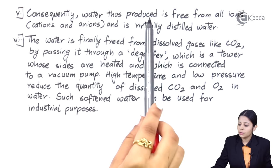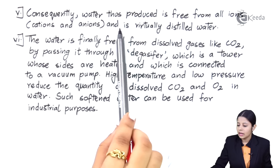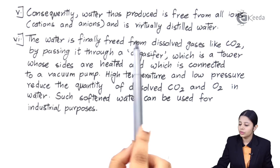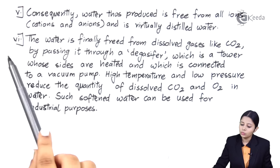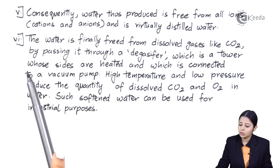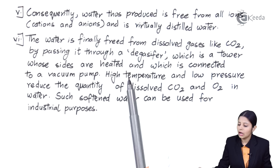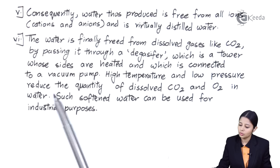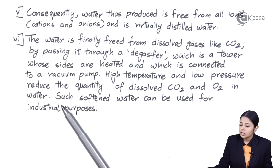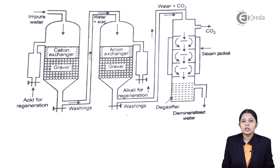Consequently, the water produced is free from all ions — cations and anions — and is virtually distilled water. The water is finally freed from dissolved gases like CO₂ by passing it through a de-gasifier, which is a tower whose sides are heated and which is connected to a vacuum pump. High temperature and low pressure reduce the quantity of dissolved CO₂ and O₂ in water. Such softened water can be used for industrial purposes.